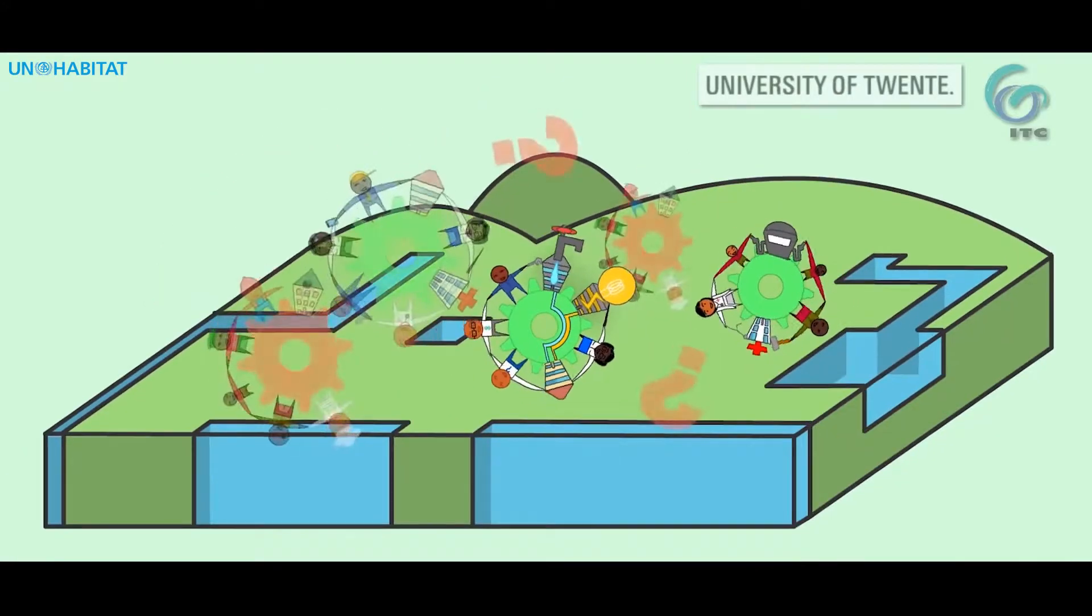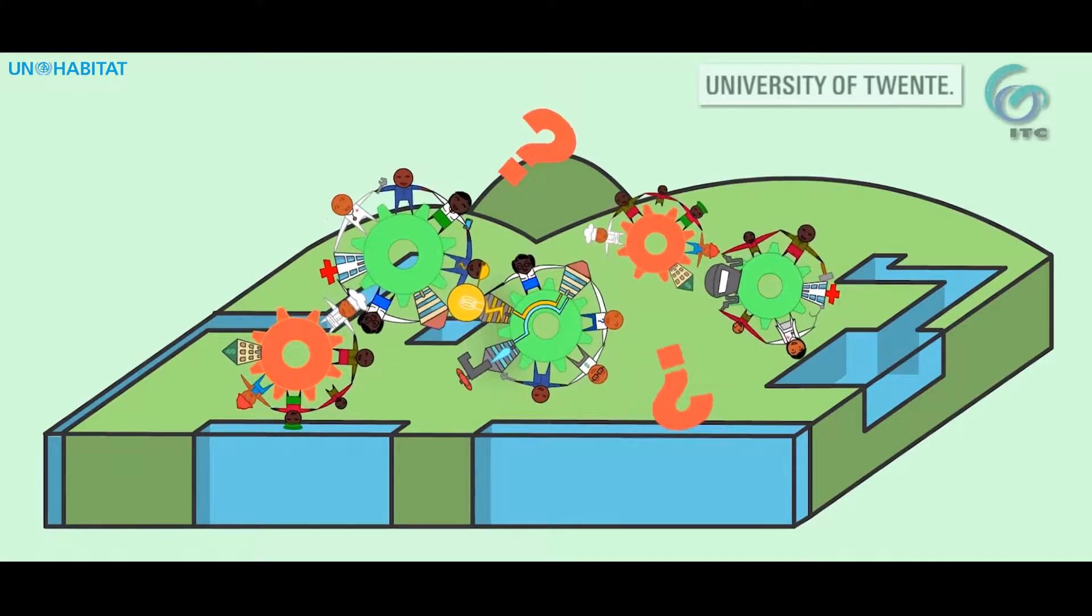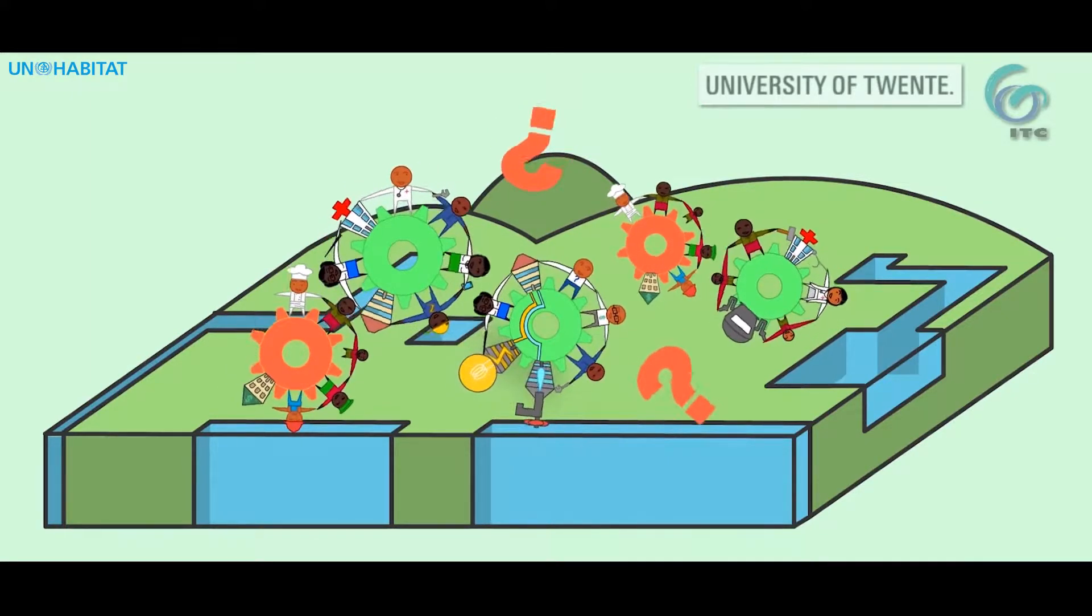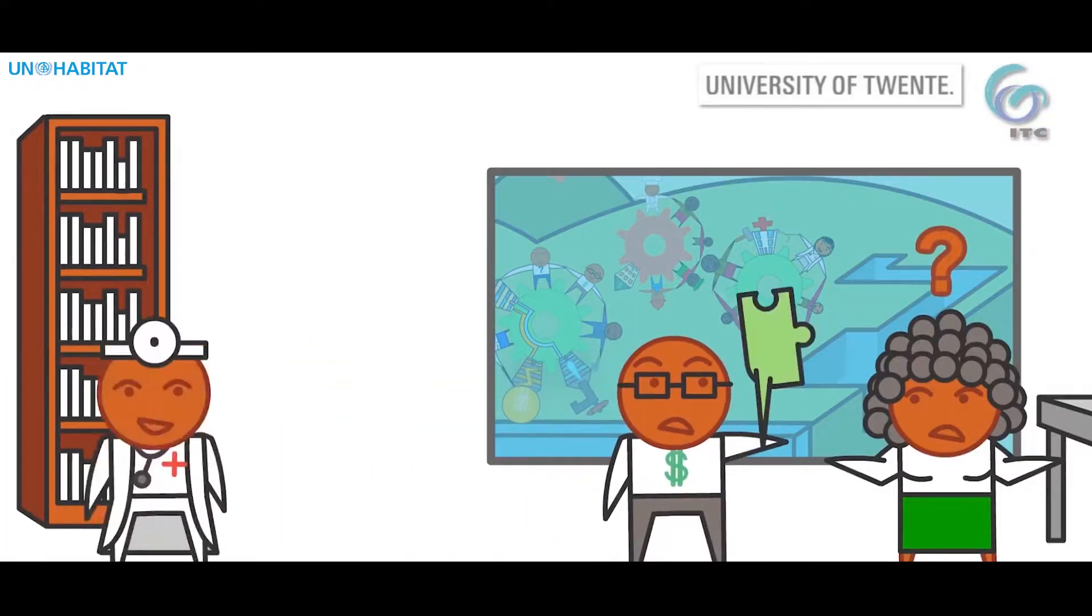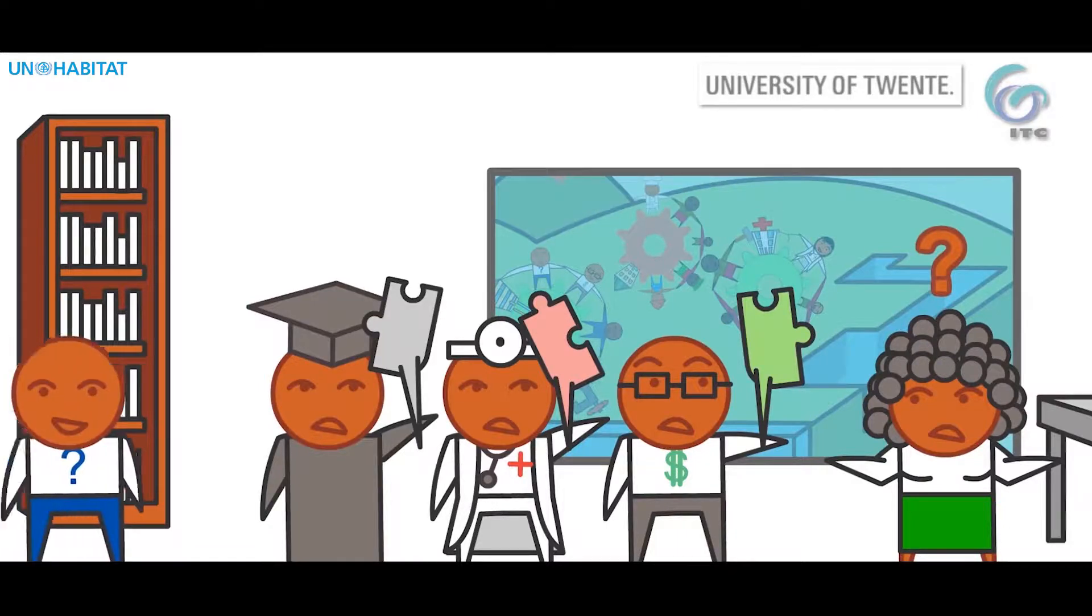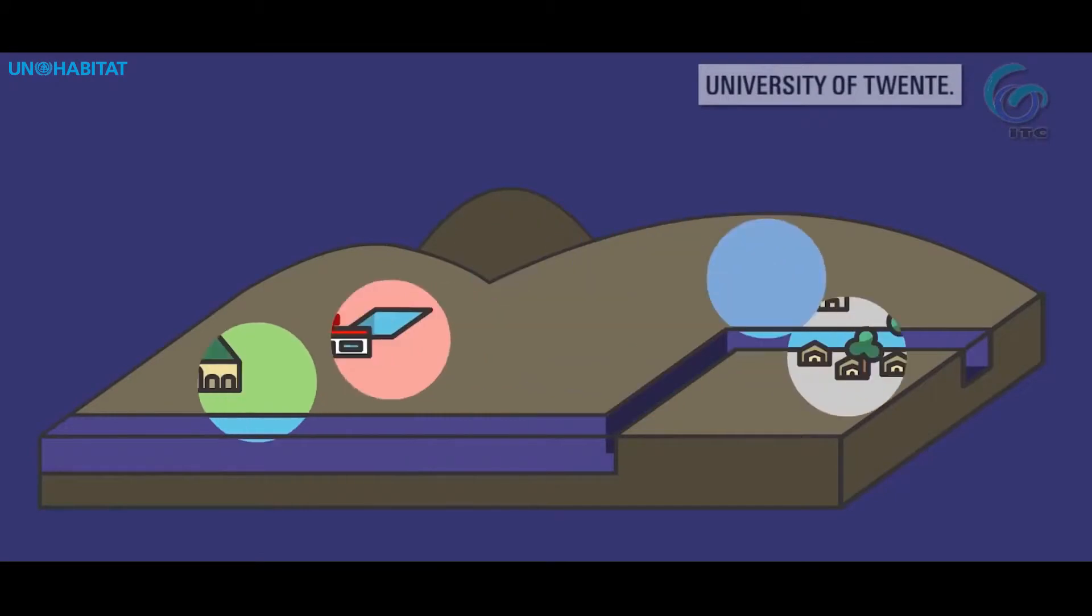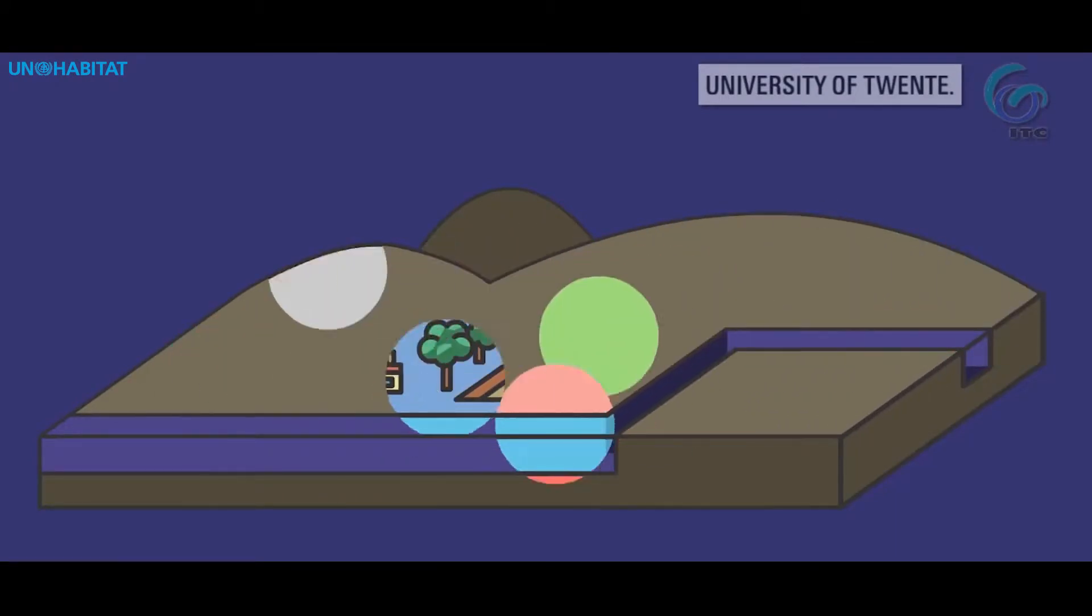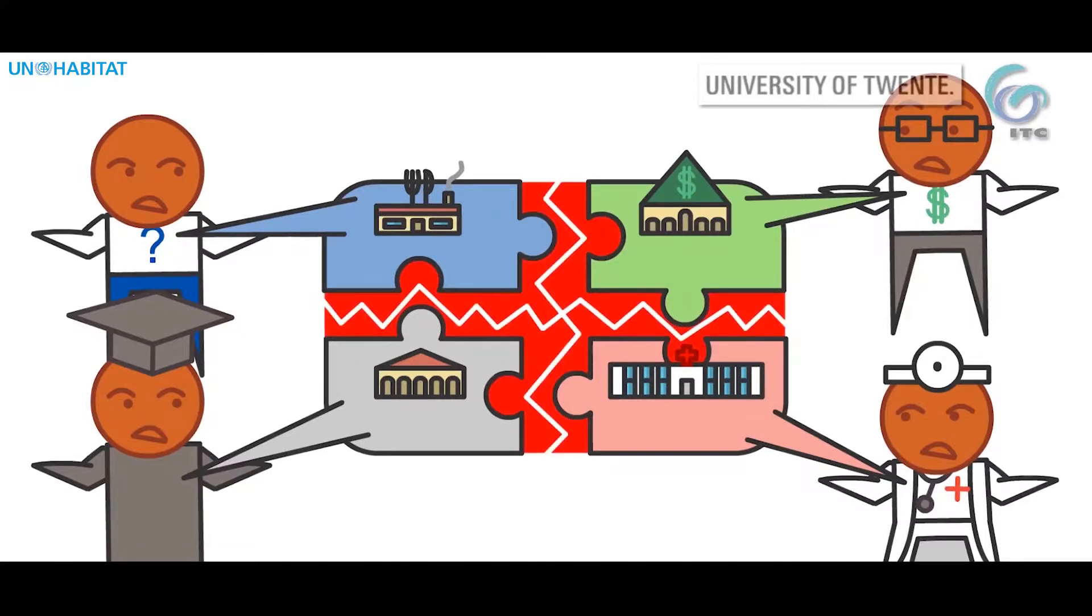But how can we get the complete picture of opportunities and problems in regional development? It is a lot of information. The economist holds a piece of the puzzle, so does the health expert and the education expert or any other expert. Everyone sees parts and no one sees the relations. Everyone has intuitive understanding and there is no shared knowledge.